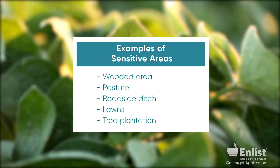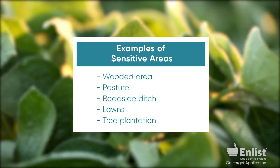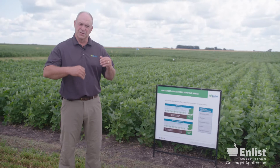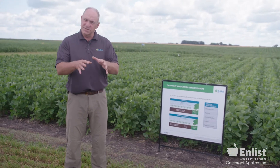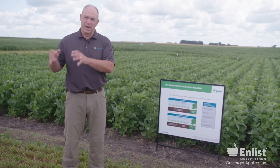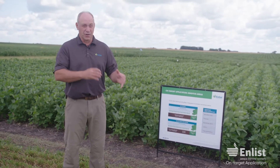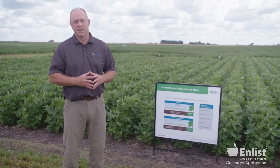The definition of a sensitive area via the EPA is an area that does or could harbor an endangered species — an endangered plant, insect, mammal, or bird. If that area could have an endangered species, it's considered a sensitive area.